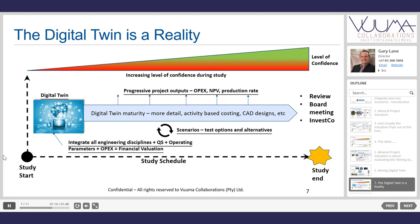As the project progresses, you can add more detail — more detailed activity-based costing, more detailed designs — and run scenarios continually. Your level of confidence increases so that when the board meeting or review happens, it's not one big surprise. You literally have the OPEX, NPV, and production rate coming out of that model continually as decisions are being made. Decision-making can therefore happen during the project, and you can decide to stop the project based on financial outputs.